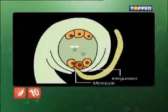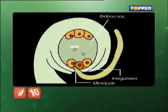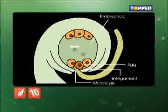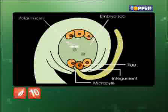This pollen tube eventually travels down the length of the style into the ovary. Now, the two male gametes in the pollen tube enter the ovule and fuse there with an egg and polar nuclei.